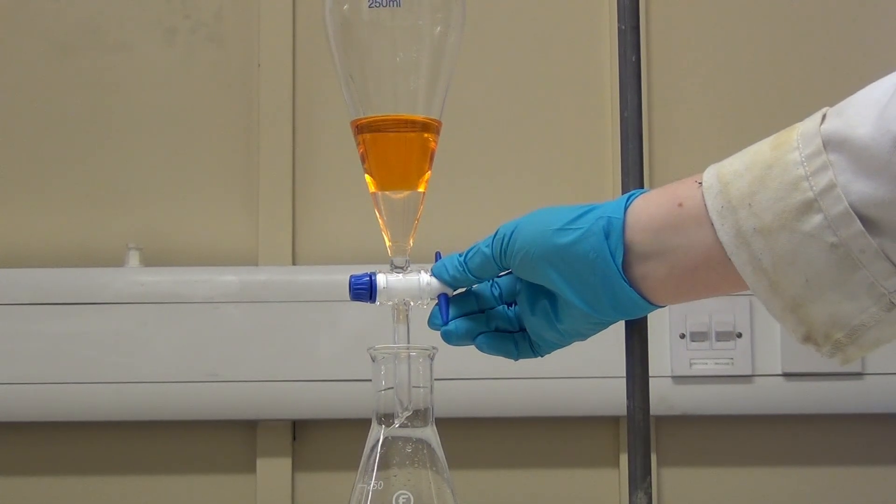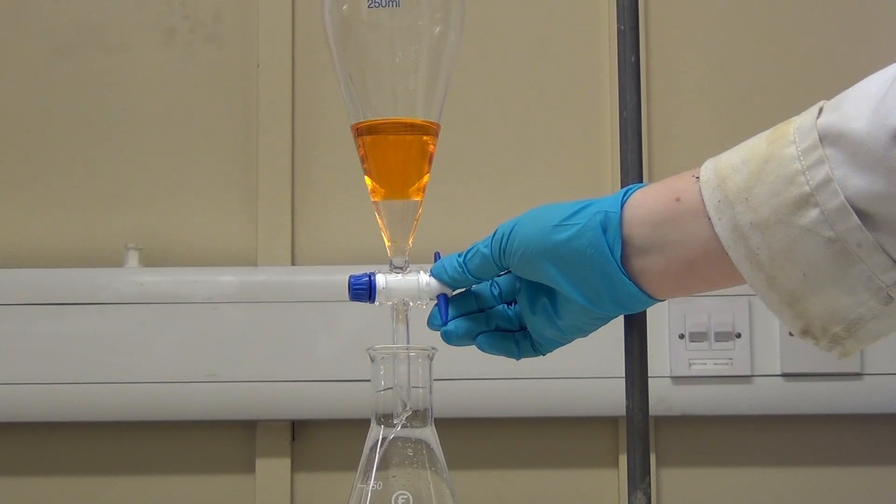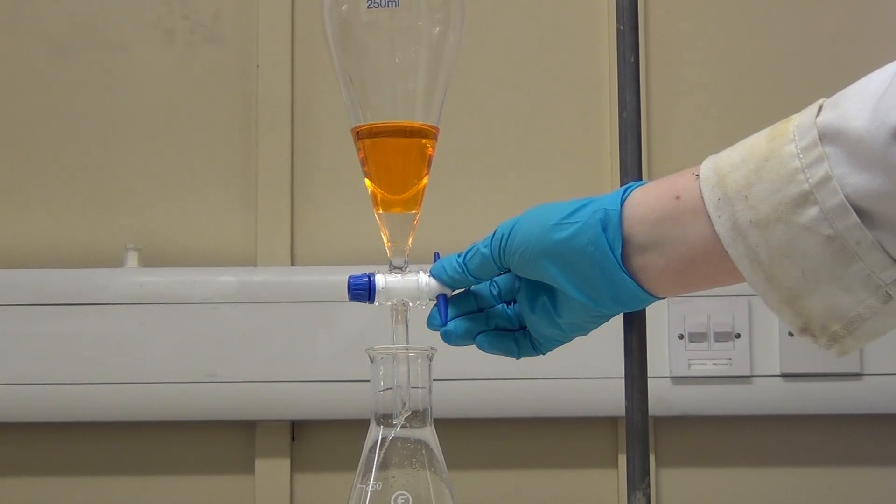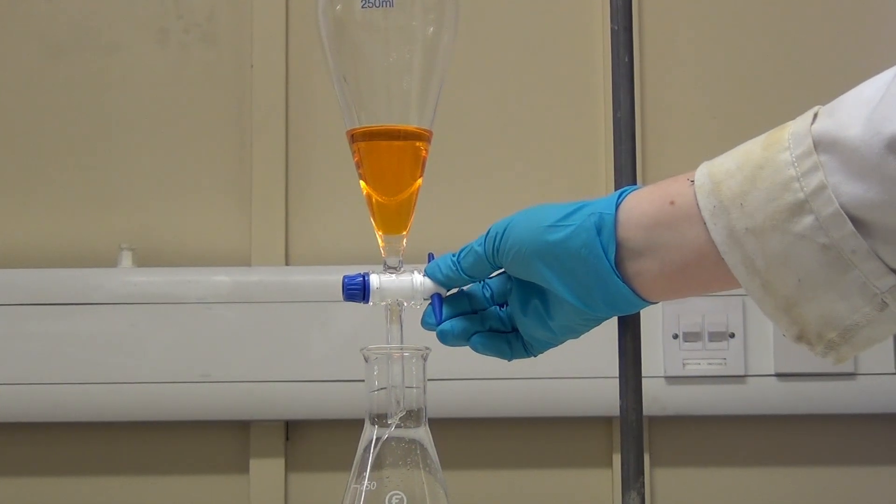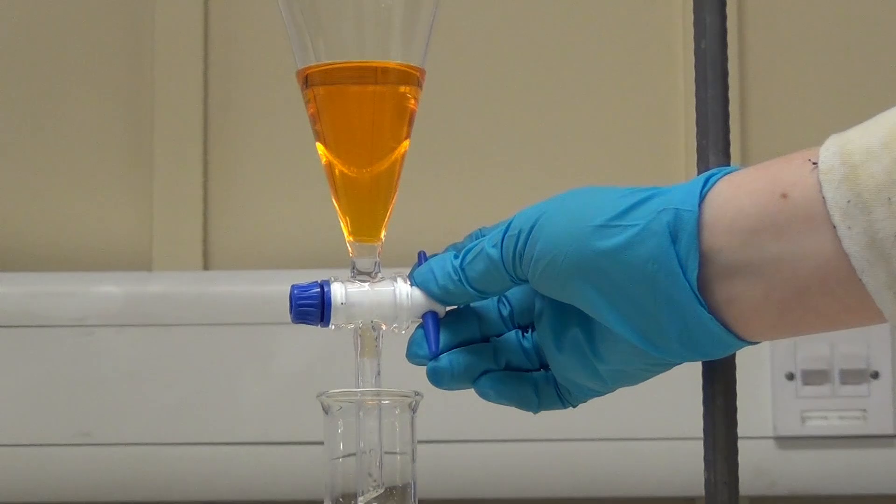Make sure you start to close the tap as the bottom layer drains out to slow the rate of flow, and to help you correctly close the tap when you can no longer see the separation between the two layers.